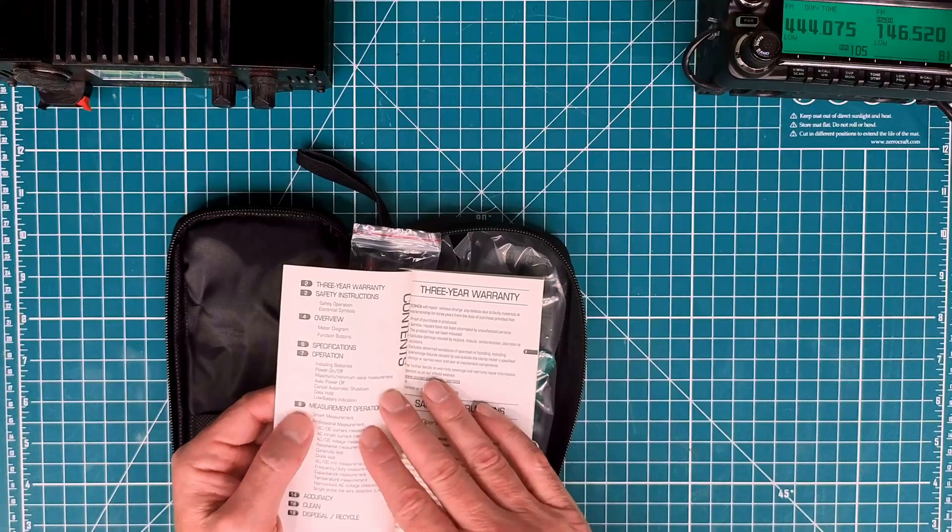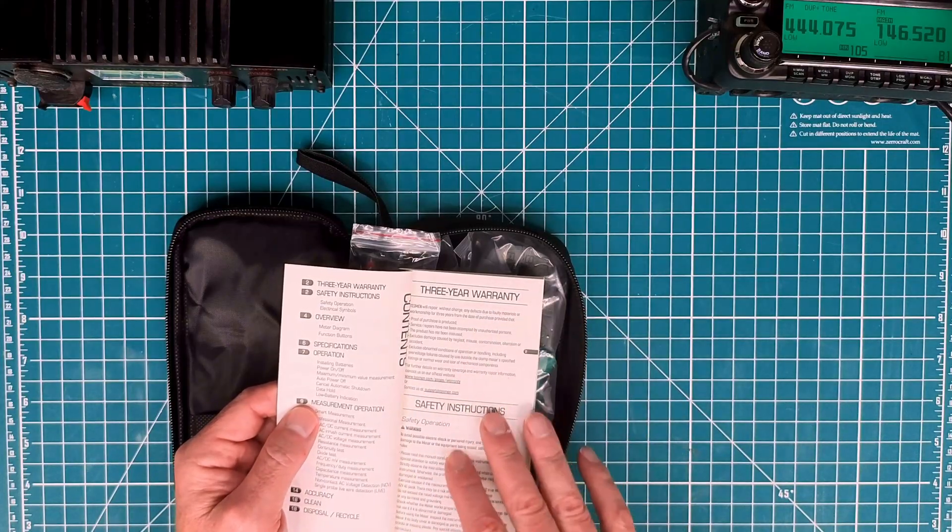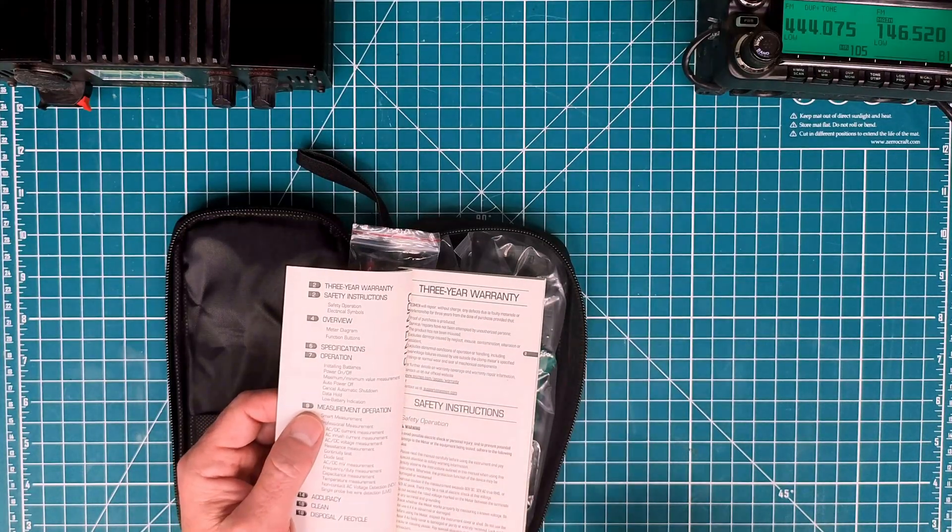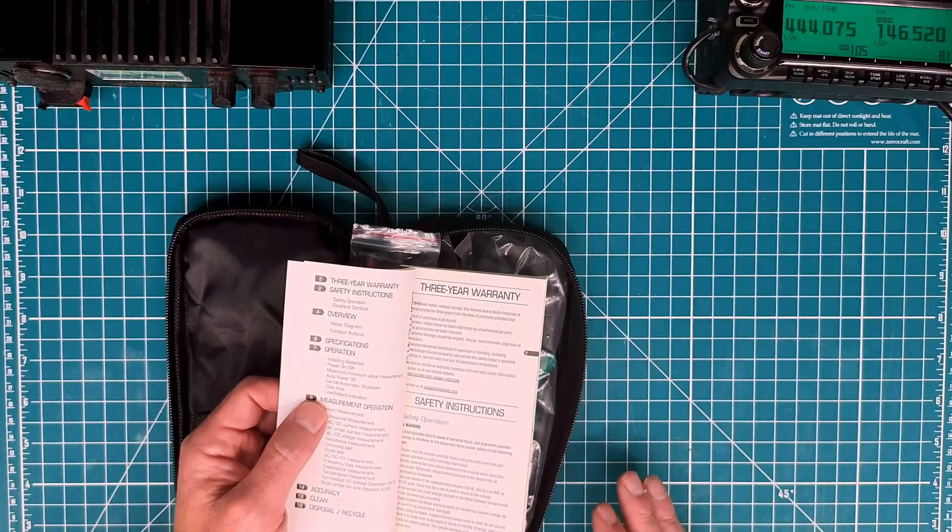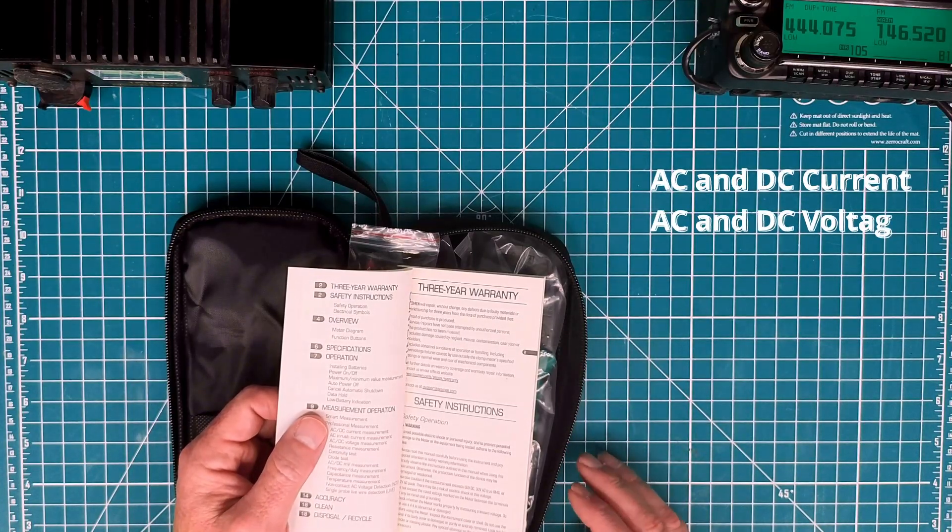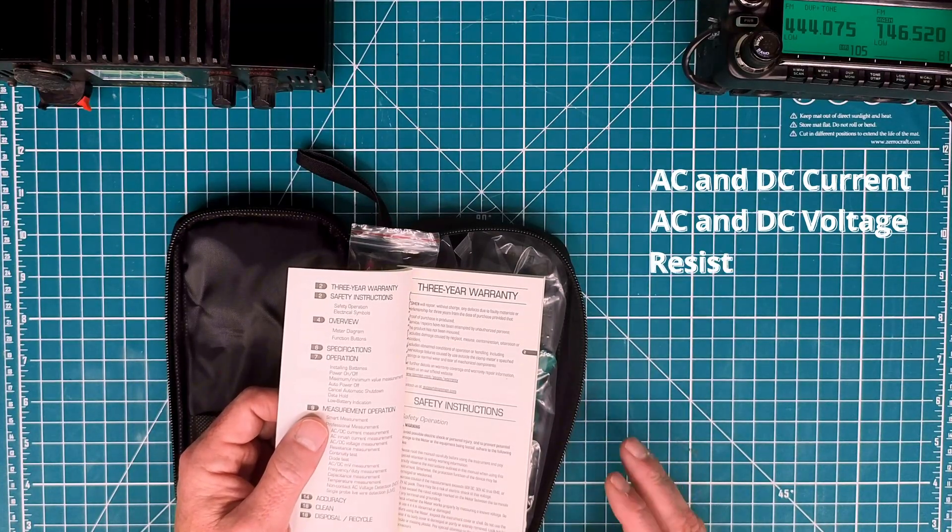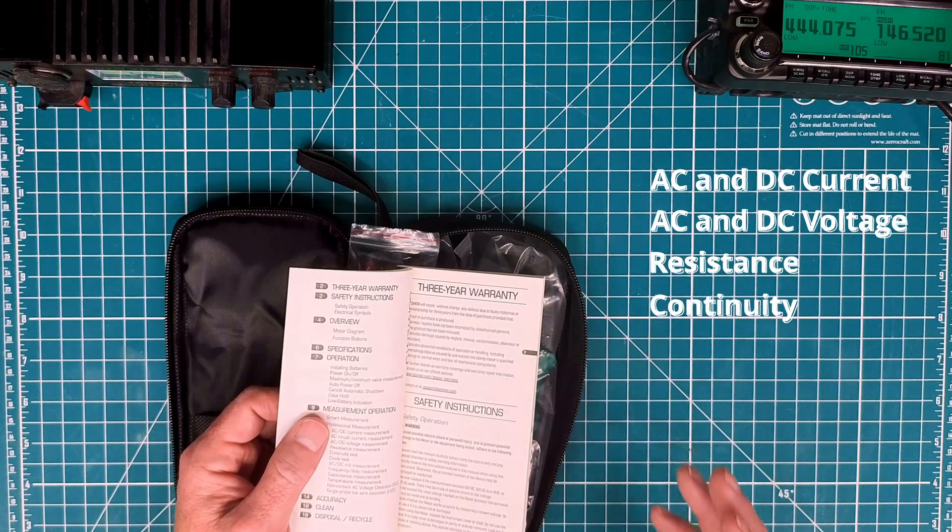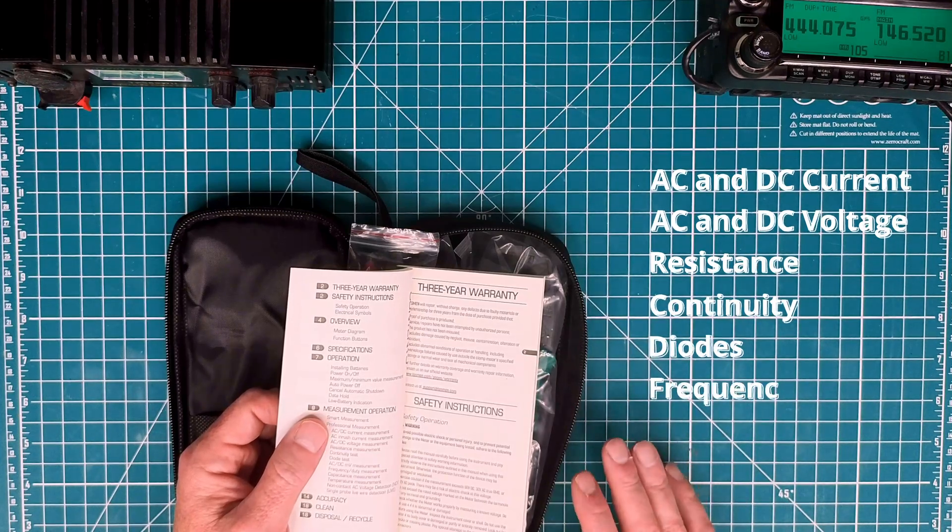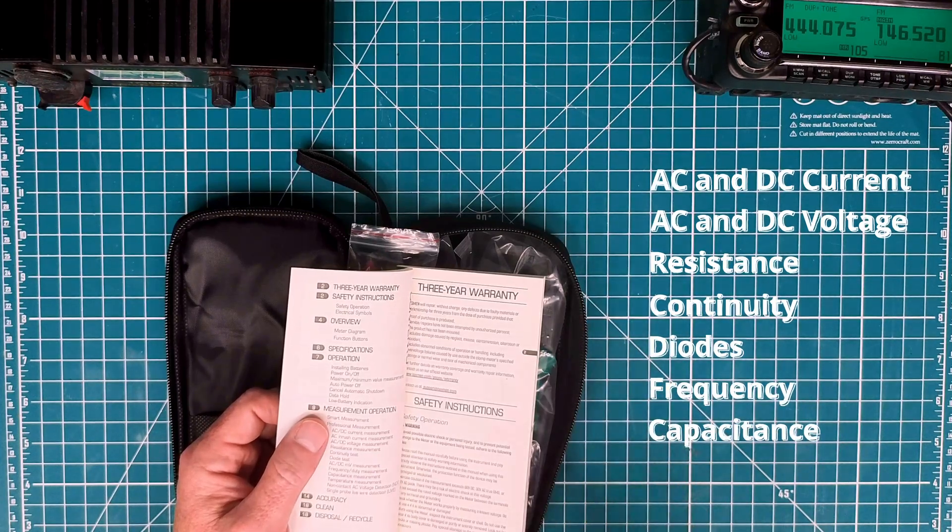Some of the key components that this meter is good for is both AC and DC current, AC and DC voltage, resistance, continuity, diodes, frequency, capacitance, and here, temperature.